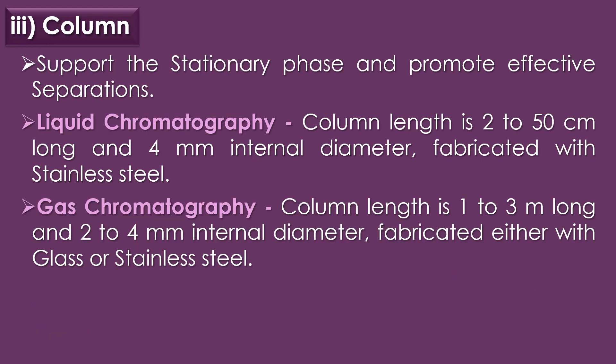The third component of column chromatography is the column. The column material and its dimensions are very crucial to support the stationary phase and promote effective separations. For liquid chromatography, the column length is 2 to 50 cm long with 4 mm internal diameter, fabricated with stainless steel. For gas chromatography, the column length is 1 to 3 m long with 2 to 4 mm internal diameter, fabricated with either glass or stainless steel.